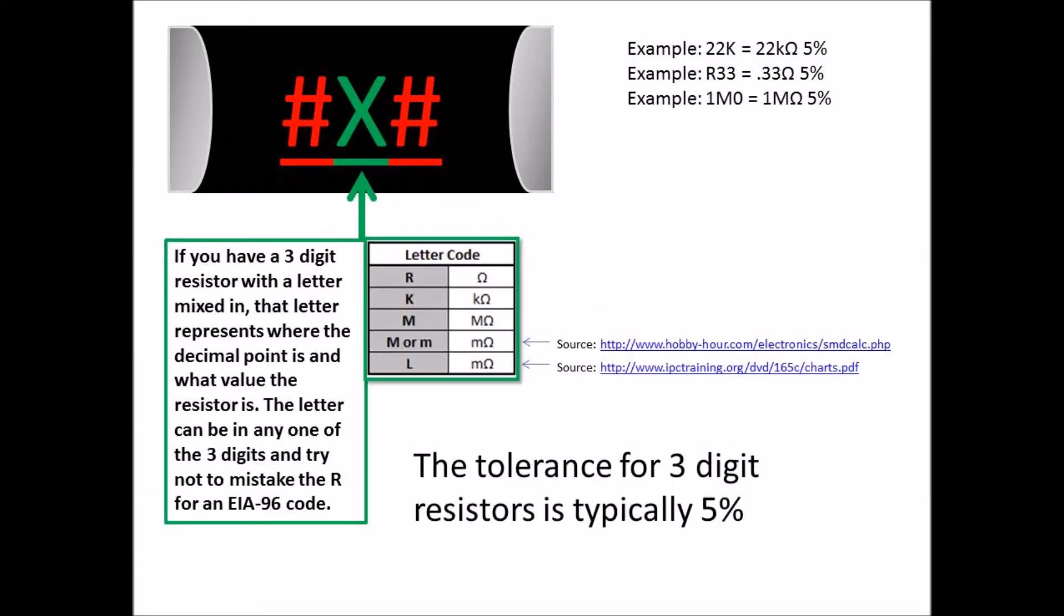So this one here is a three-digit resistor that has a letter in it, and the letter shows where the decimal point is and also tells you what the value of the resistor is. So if it's an R, then the R equals a decimal point.